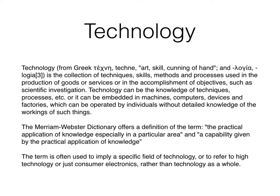In 1937, the American sociologist Reed Bain wrote that technology includes all tools, machines, utensils, weapons, instruments, housing, clothing, communicating and transporting devices, and the skills by which we produce and use them.